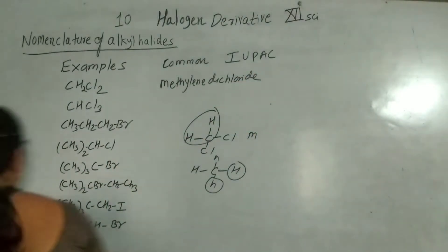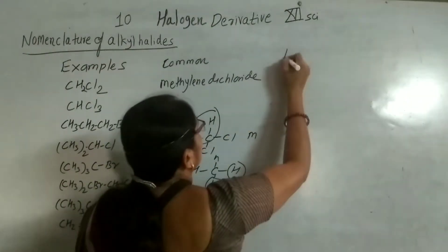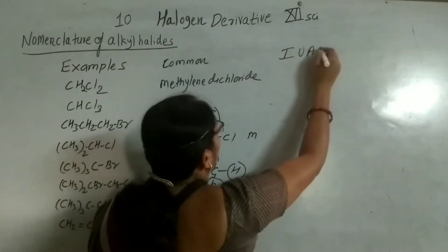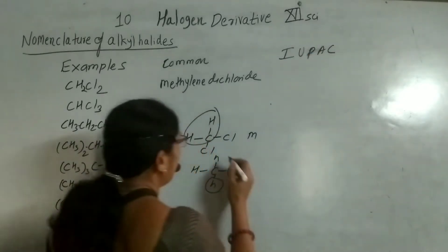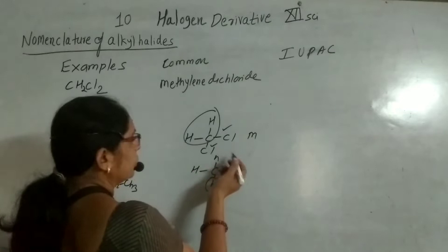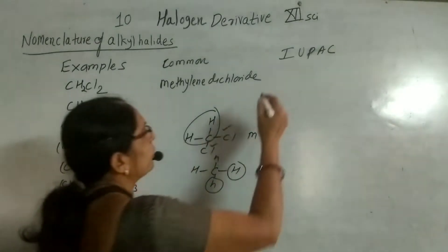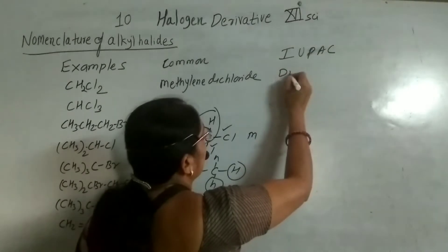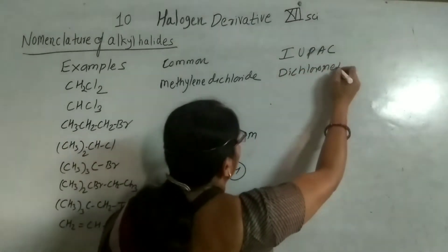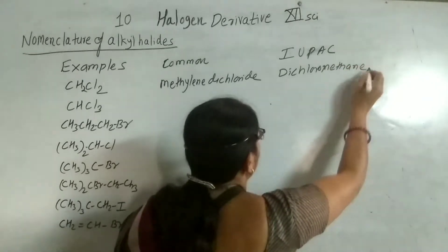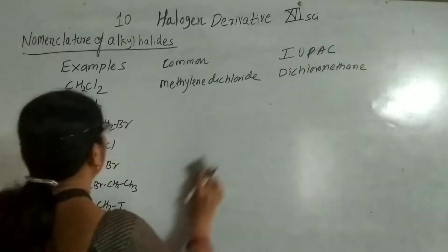When you consider its IUPAC name, identify the halogen groups — there are 2 chlorines on the same carbon, carbon number 1, which is methane. So its IUPAC name is dichloromethane. There is no need to write the number because there is only one carbon.